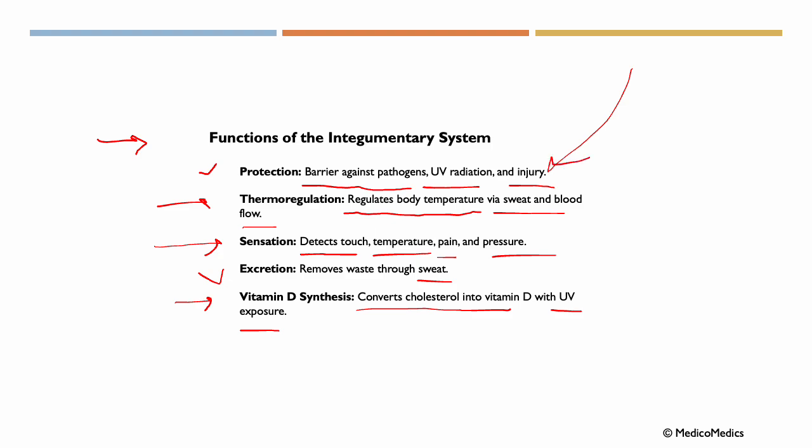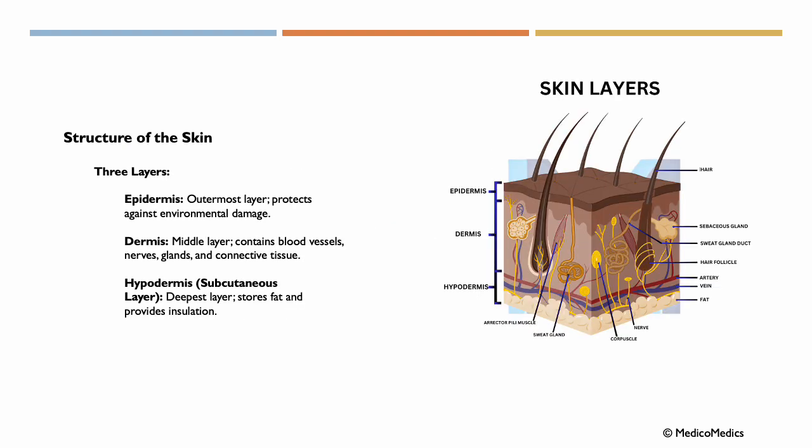So our skin plays a very vital role. Now let's look at the structure of skin. We have three main layers. We have the epidermis, which is the outermost layer, protecting us against environmental damage. Seen here, this part.